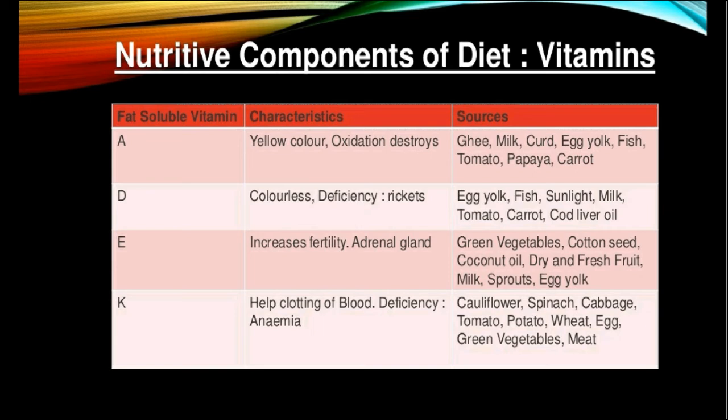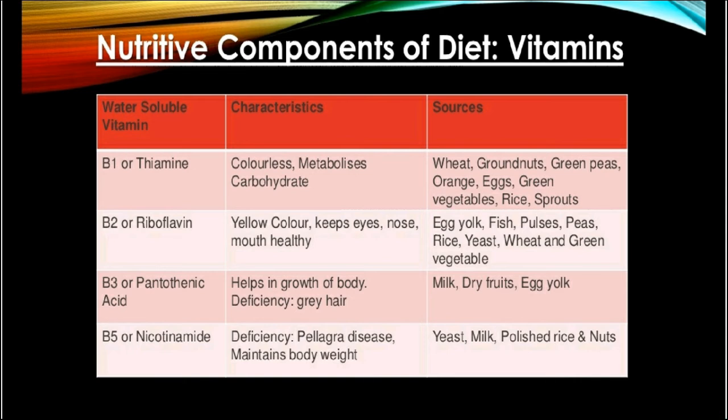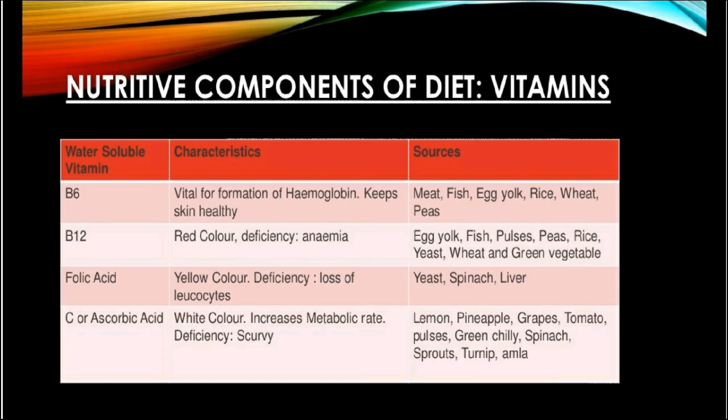That's all for fat-soluble vitamins. The next type is water-soluble vitamins, in which we will study about vitamin B complex. There are 8 vitamins under vitamin B complex: vitamin B1 also known as thiamine, vitamin B3 also known as niacin, vitamin B5 pantothenic acid, vitamin B6, vitamin B7 also known as biotin, vitamin B12, and the last one is folic acid.